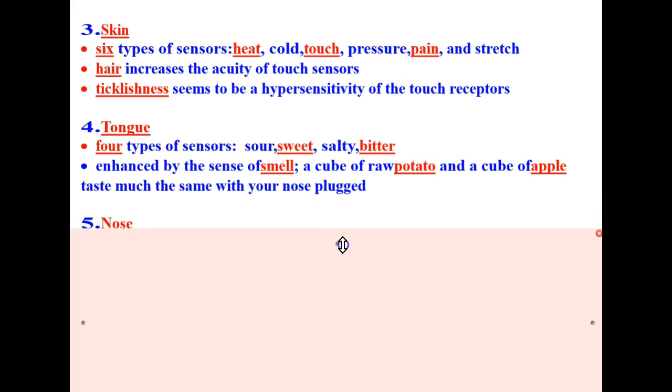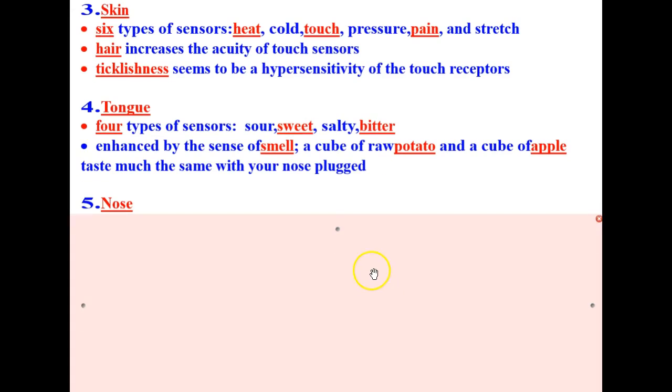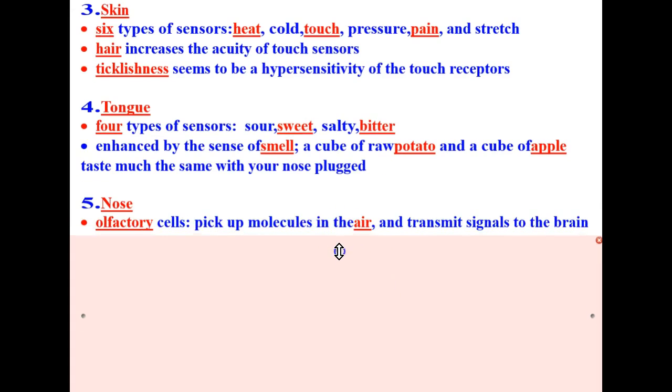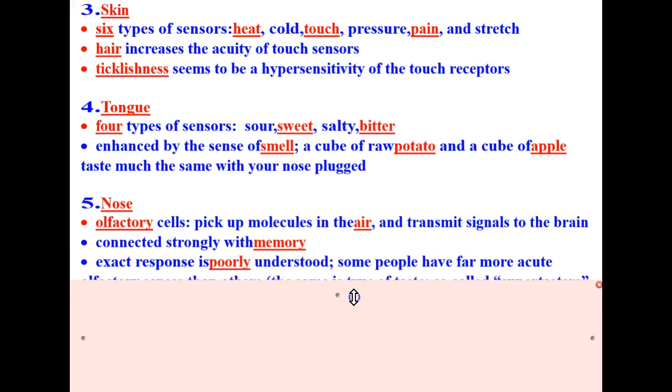And last, let's talk about the sense of smell, your nose. The olfactory cells pick up molecules in the air and transmit signals to the brain, and smell is strongly connected with memory. The exact response of this is poorly understood. Some people have far more acute olfactory senses than others, and the same is true of taste. So-called super tasters are hired by food and wine companies to taste test their products, for example.